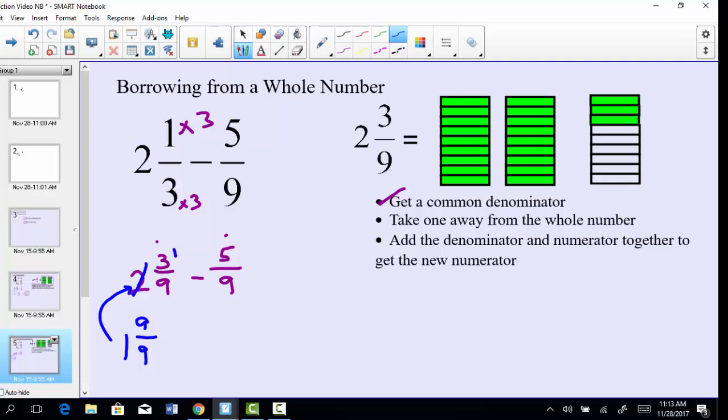Now we still have this fraction 3/9 left to the side. We have to add on our 3/9, and that renames this as 1 and 12/9. So 1 and 12/9 is totally equivalent to 2 and 3/9.